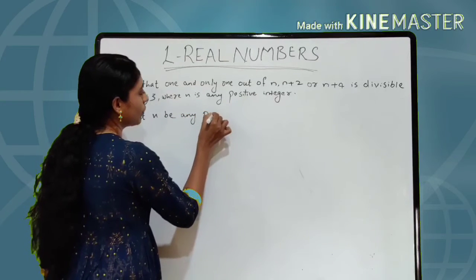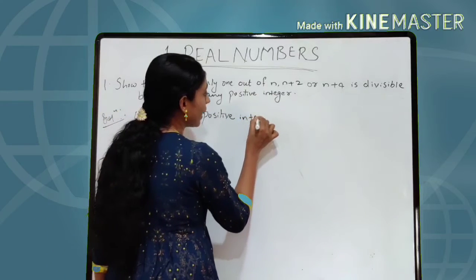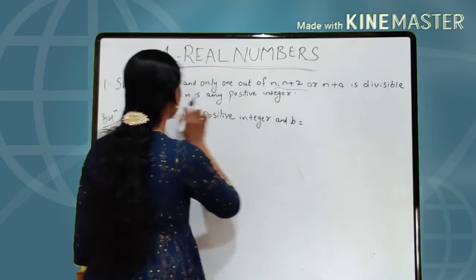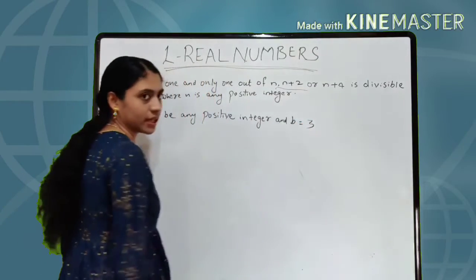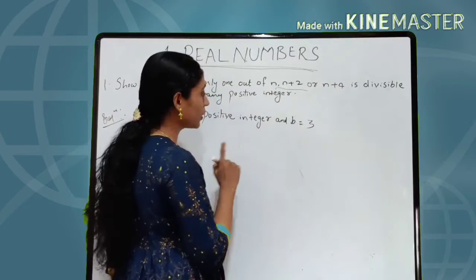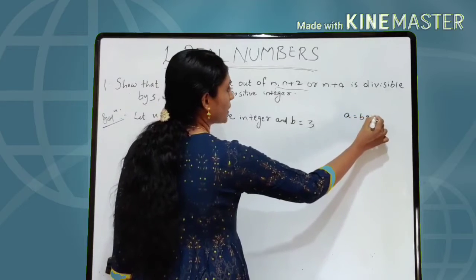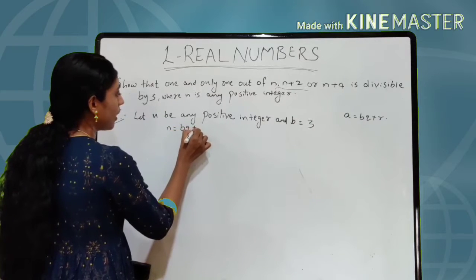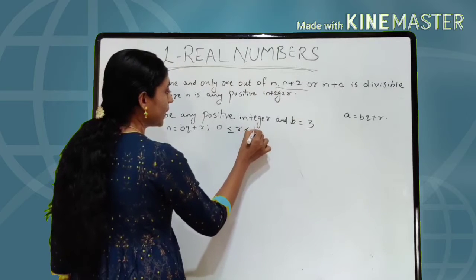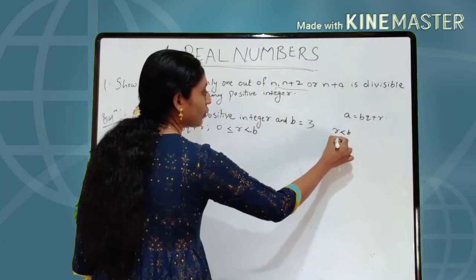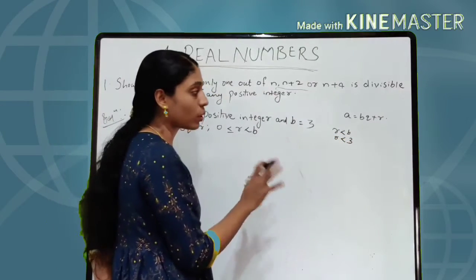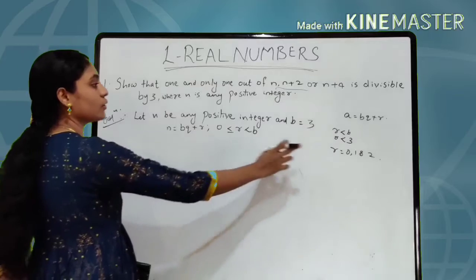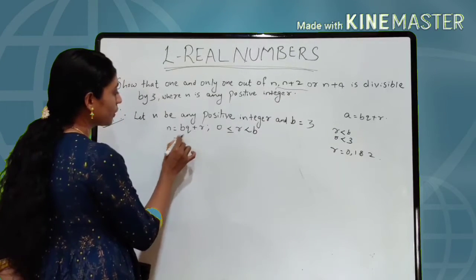Here we can take the value of B as 3, because it is given that these three are divisible by 3. According to Euclid's division lemma and algorithm, we know the equation A = BQ + R. Here instead of A it is given as N, so N = BQ + R for 0 ≤ R < B, and the value of B is 3. So the remainders can take values 0, 1, and 2 — it should be less than 3.